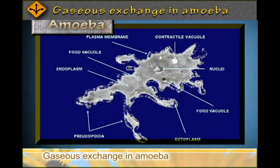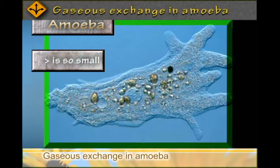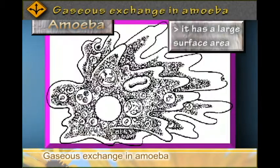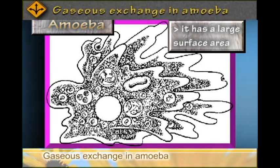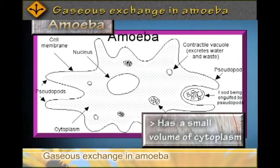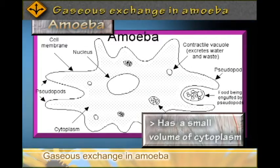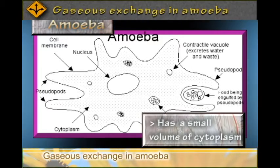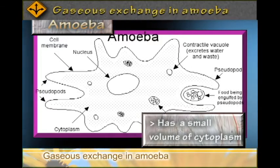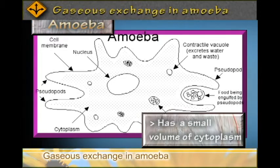Because the Amoeba is so small and has a large cell membrane surface area and a small volume of the cytoplasm, this facilitates the diffusion of oxygen in and the diffusion of carbon dioxide outside.